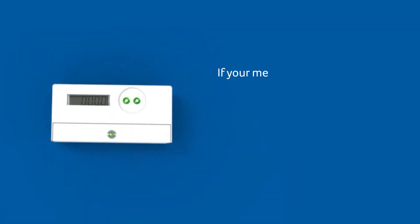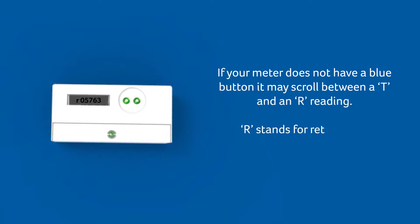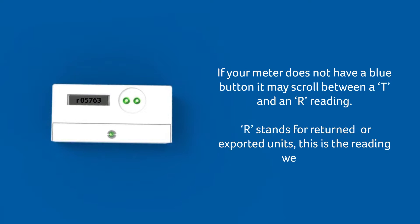If your meter does not have a blue button, it may scroll between a T and an R reading. R stands for returned or exported units — this is the reading we need.